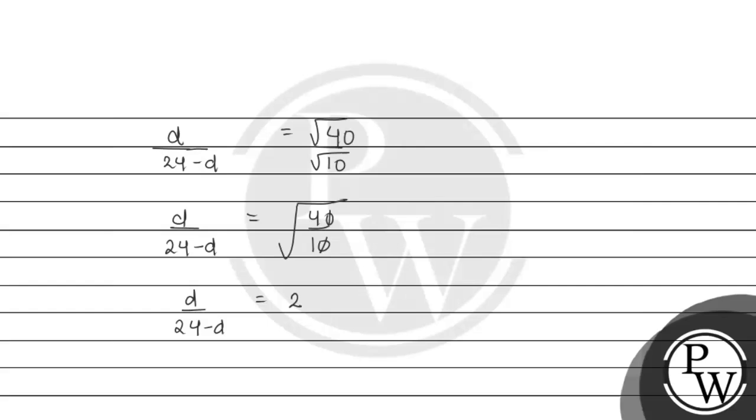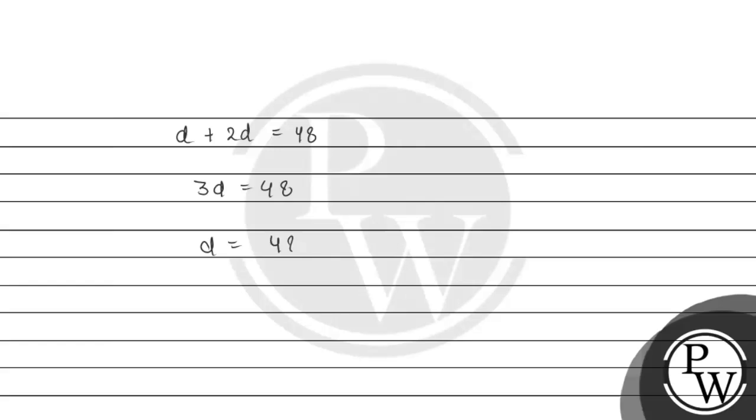So here we can do d will be equal to 48 minus 2d. So d plus 2d will be equal to 48. So 3d will be equal to 48. So d will be equal to 48 divided by 3, which is 16 centimeter.